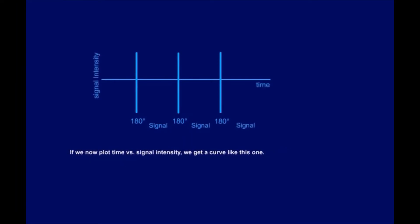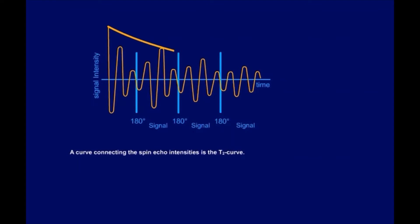We can naturally perform the experiment again, with another 180-degree pulse, and another, and another. If we now plot time versus signal intensity, we get a curve like this one. A curve connecting the spin-echo intensities is the T2 curve. From this curve, we can see that the spin-echo, the resulting signal, decreases with time.